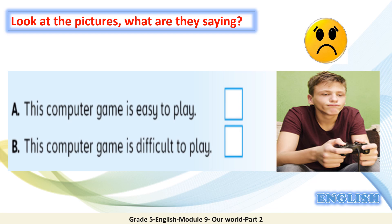Let's play a guessing game and learn more about adjective plus full infinitive. First of all, look at the pictures. What are they saying? Look at the face — we have a sad face. Then look at this boy. Is 'This computer game is easy to play,' or 'This computer game is difficult to play'? Looking at the boy's face, we say: 'This computer game is difficult to play.'